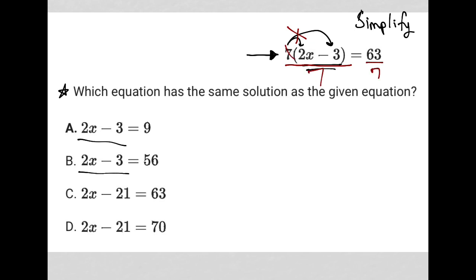By dividing by 7, I'm going to end up with 2x minus 3 equals 9, because 63 divided by 7 is 9, and I can see that is answer choice A.